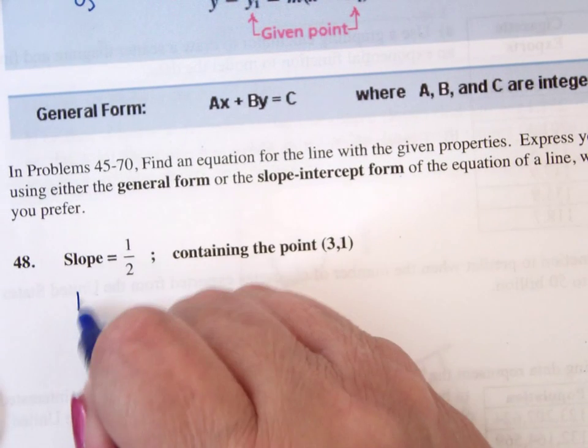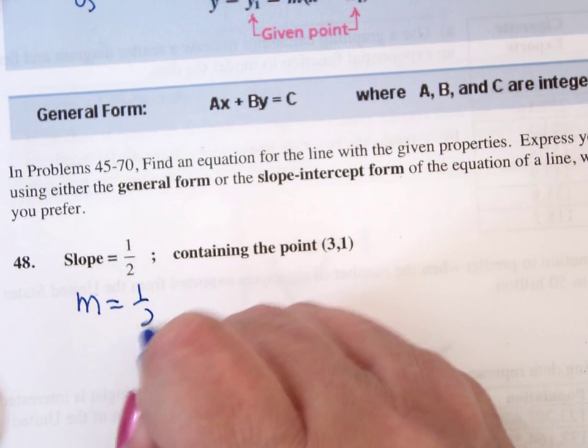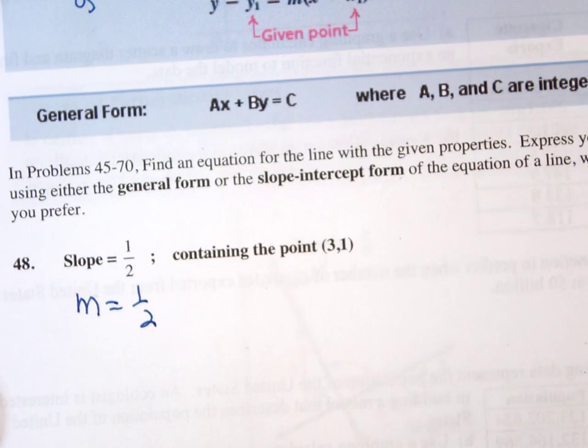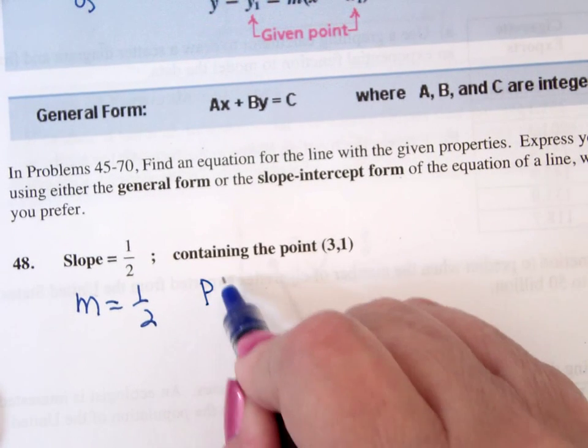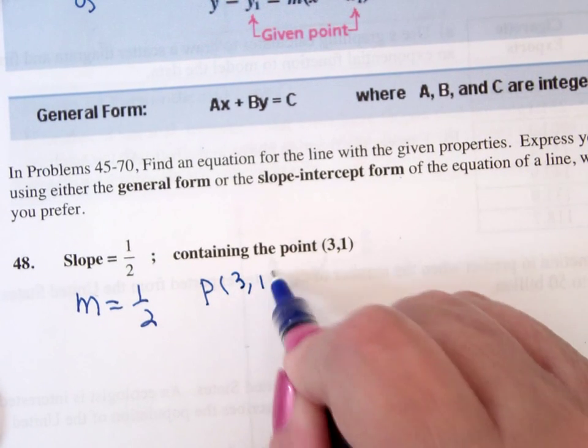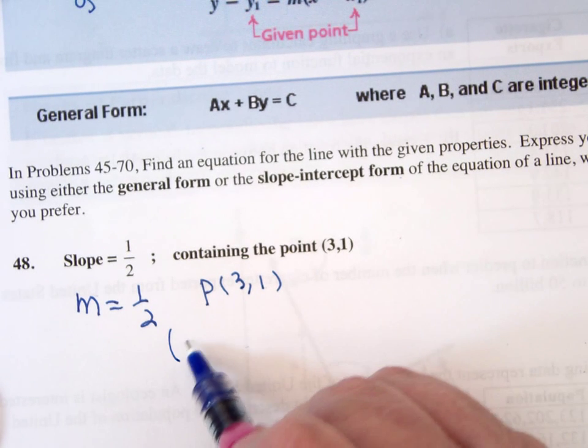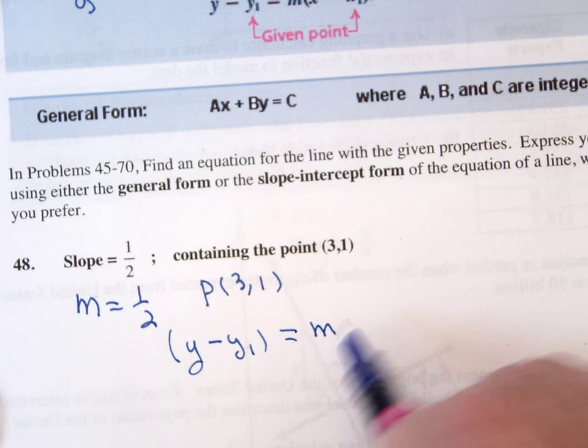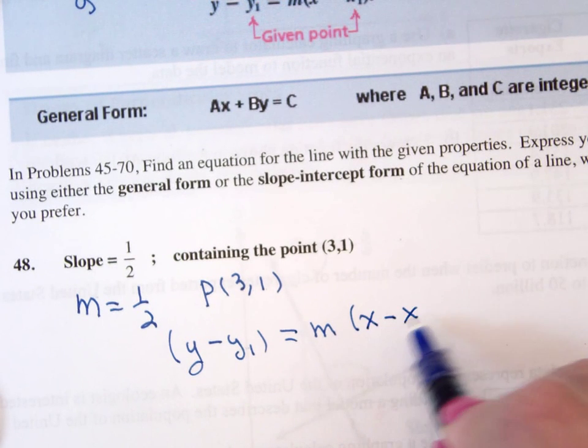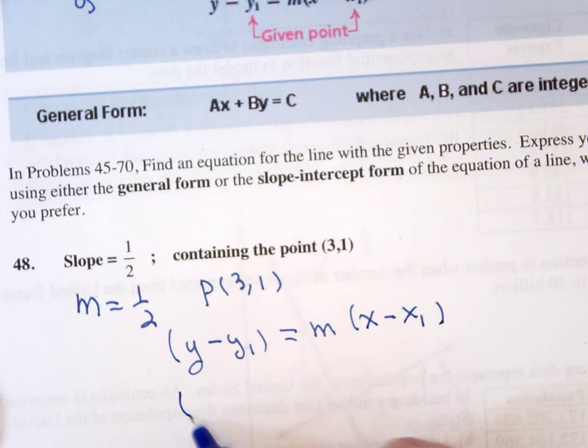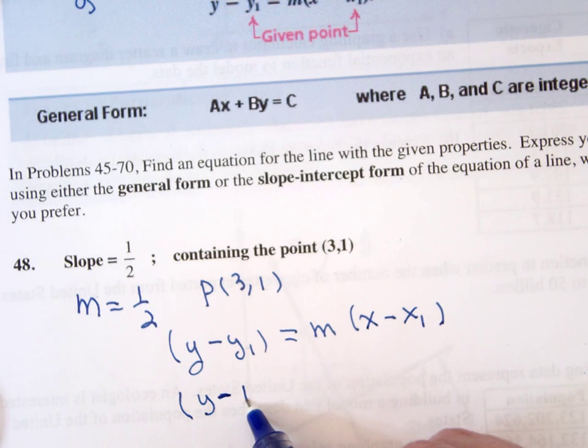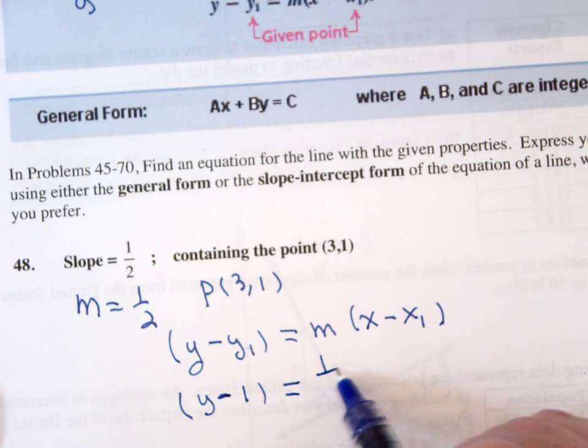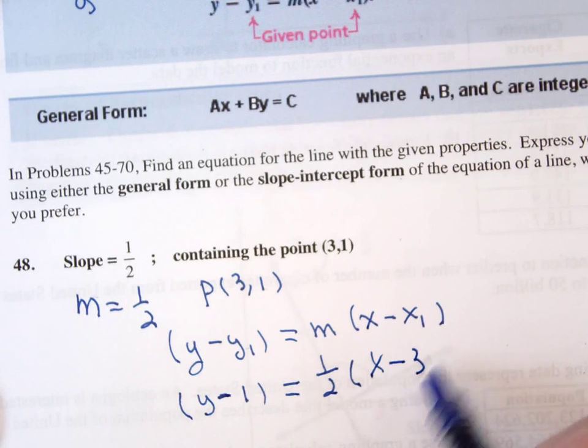They give me that the slope is one half, and then I have the point is three one, and I tend to like to use this guy, y minus y1 is equal to m times x minus x1, so that y minus 1 equals m, which is one half, times x minus 3.